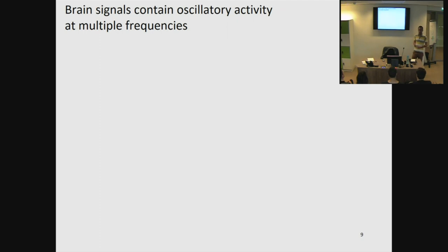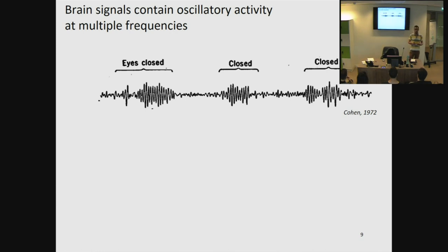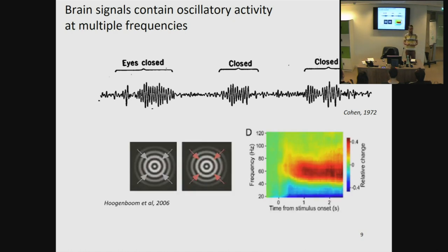Going to brain oscillations. We know that brain signals contain oscillatory activity at multiple frequencies. What you can see here is the very first MEG experiment done by Cohen in 1972. It's a replication of the famous EEG experiment by Hans Berger in the 1920s, who for the very first time showed alpha oscillations. This experiment shows that when subjects have their eyes closed, this 10 hertz activity has a higher amplitude than when they have their eyes open. But more recent findings on oscillations are less trivial, and you often cannot see them with the naked eye and need more advanced techniques.